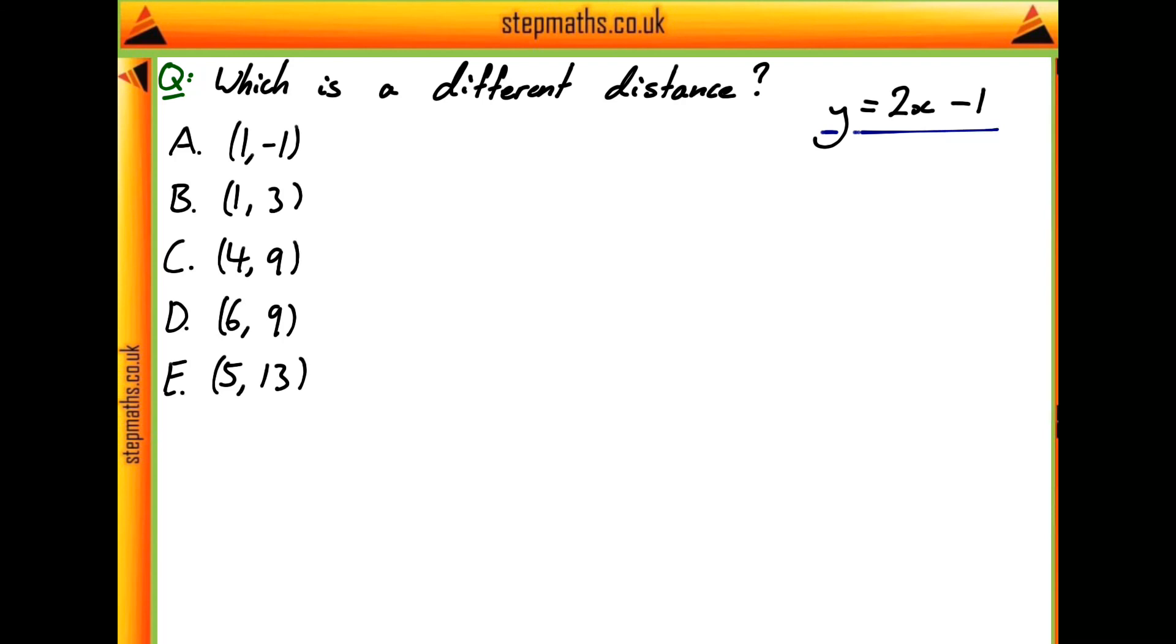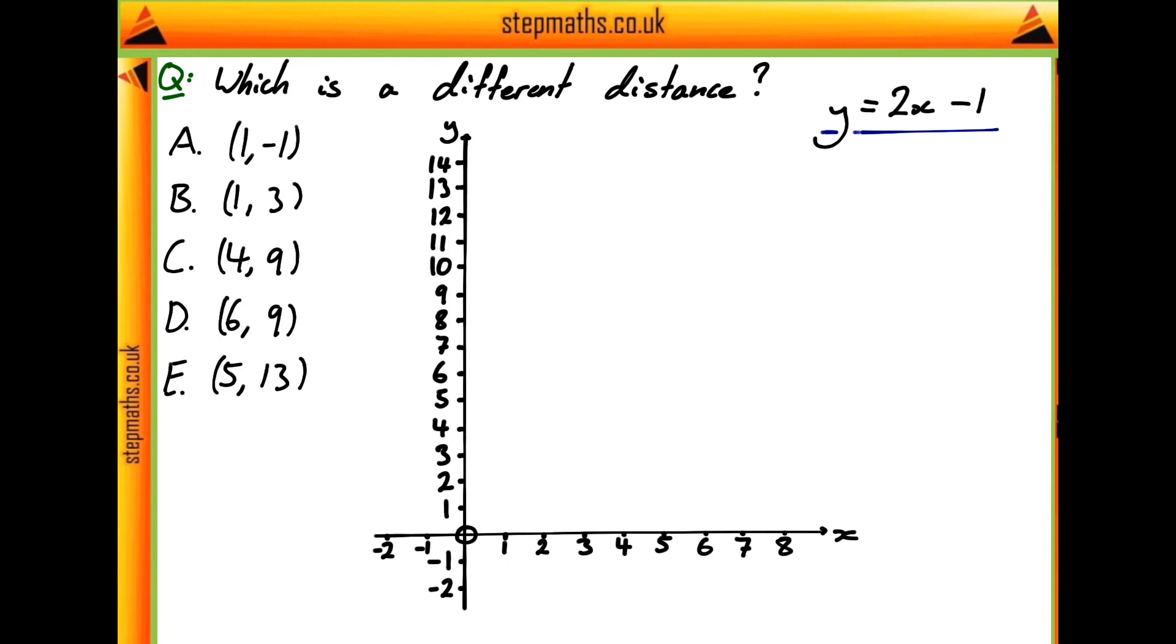So to try and answer this question, there's a few different ways in which you could attack it, but I think perhaps the easiest thing to do in an exam is to probably just draw a diagram. So if we were to label some axes here, and of course you'd do it very roughly in an exam, just to see if it gives you a rough idea, and what you could do is you could just see if there's one of them which is obviously a different distance from the line.